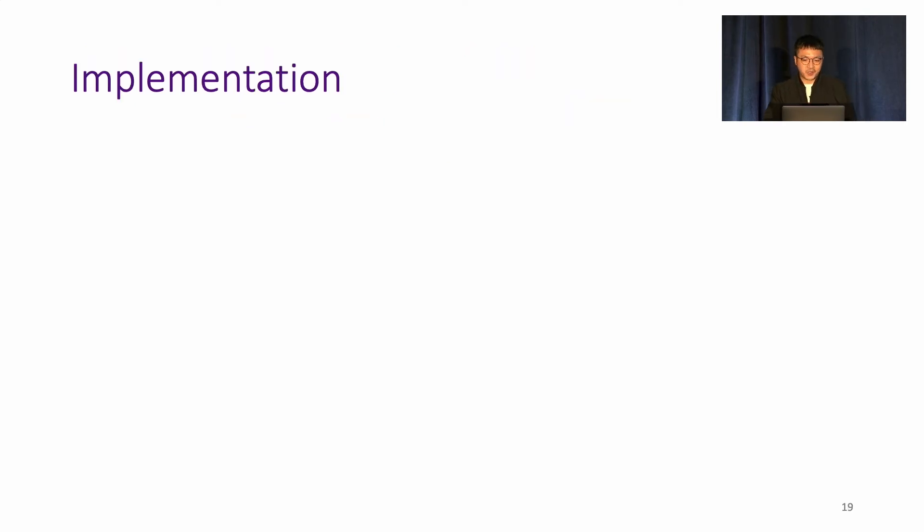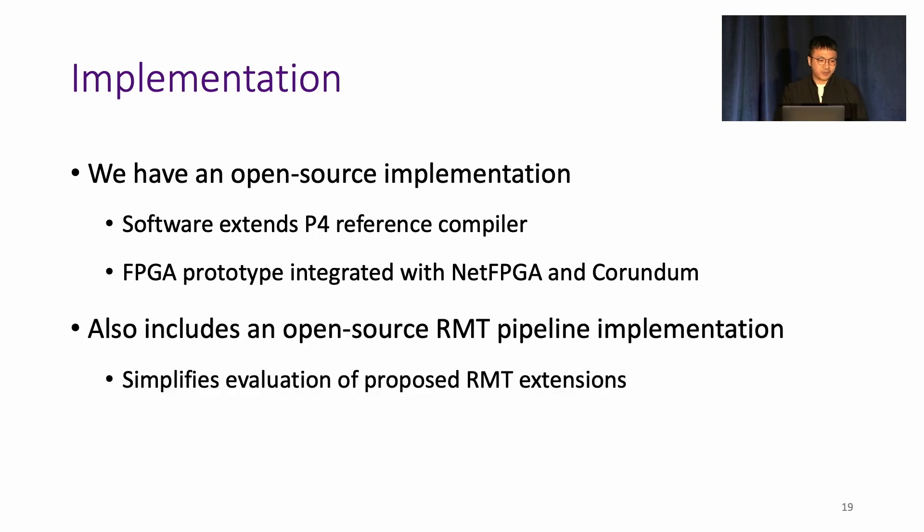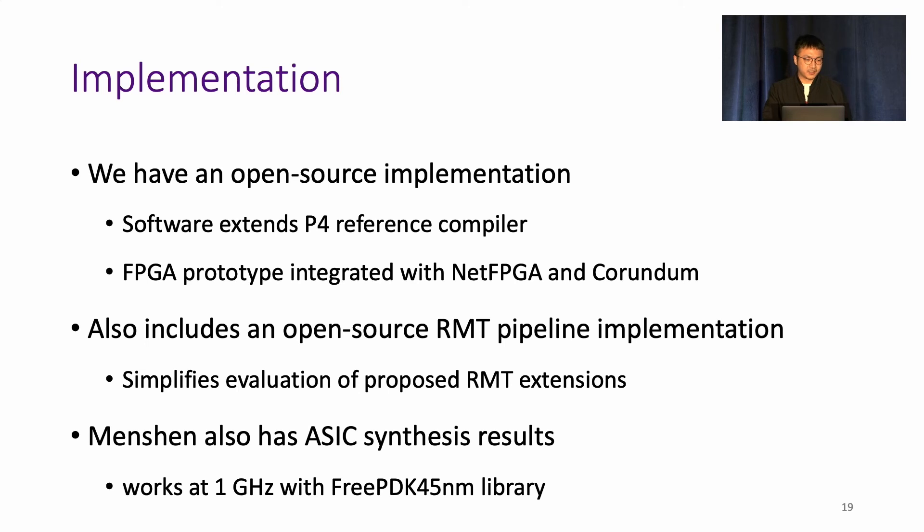For Menshen, we have an open source implementation for both software and hardware. The software extends P4 reference compiler, and the hardware is integrated with NetFPGA and Corundum. It also has an open source RMT pipeline, which we hope others can use for their own RMT extensions. Menshen also has an ASIC synthesis which can work at one gigahertz.